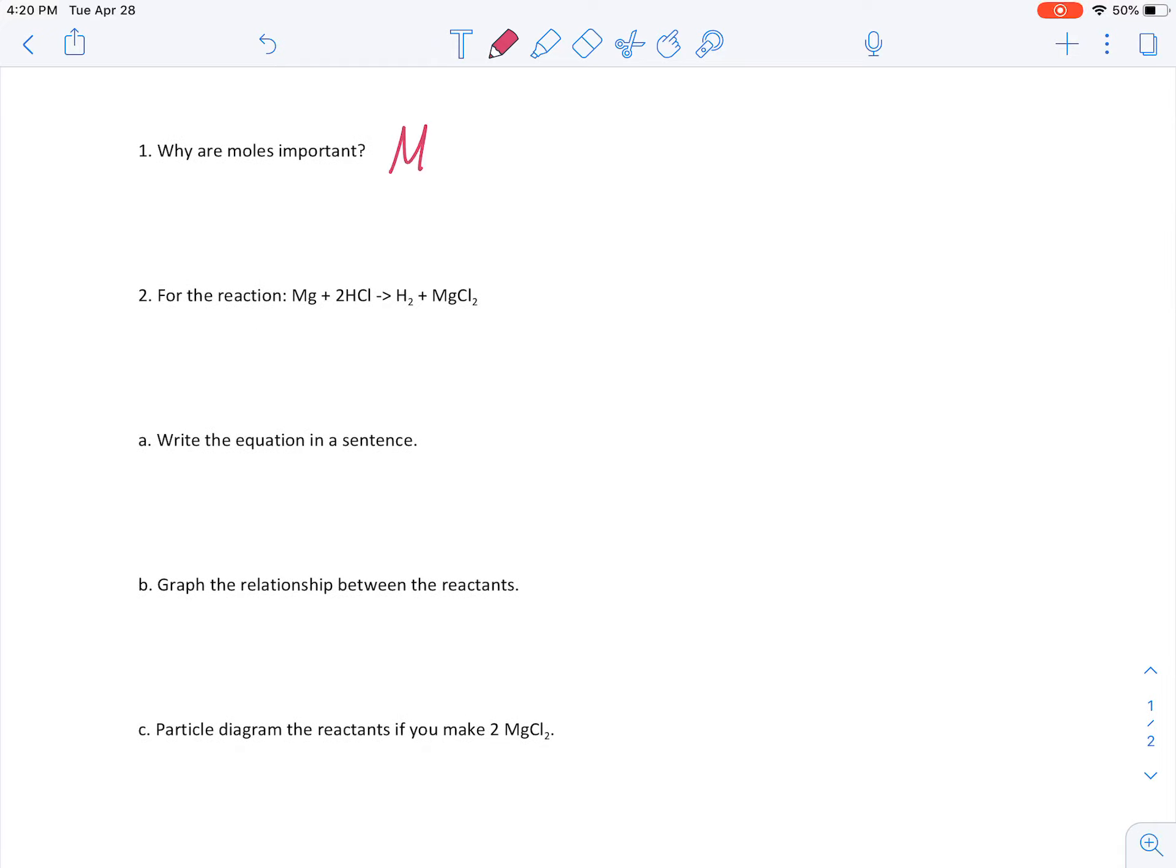Moles, as you guys are aware, are a counting number that chemists use to simplify large quantities of particles. So we know that for every one mole of any substance, there are 6.022 times 10 to the 23rd particles. So it's much easier to use mole to represent ratios of particles than it is to actually use the particles themselves, because then you start to get into these enormous numbers with crazy amounts of exponents.